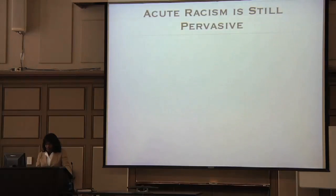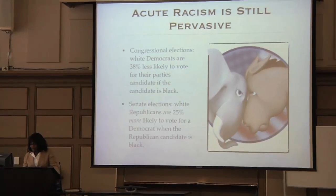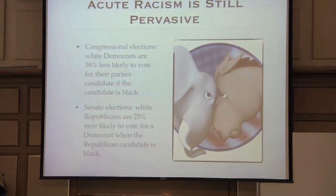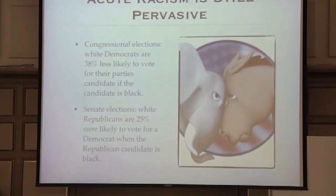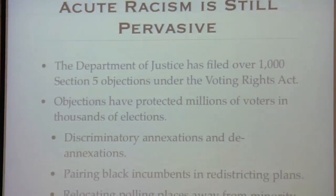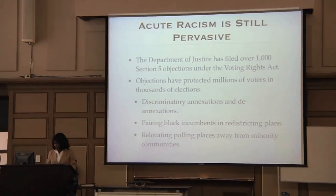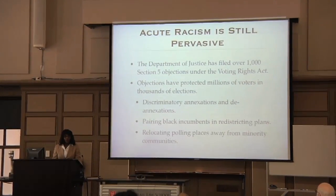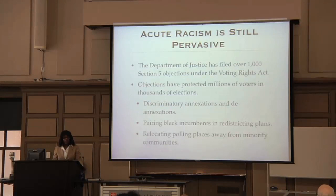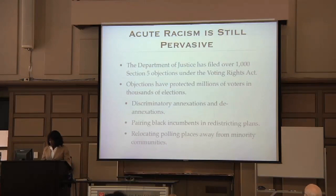Acute racism is still pervasive in the political process. A recent congressional election showed that white Democrats are 38% less likely to vote for their party's candidate if that candidate is black. In Senate elections, white Republicans are 25% more likely to vote for a Democrat when the Republican candidate is black. So we still have evidence of racially polarized voting. The Justice Department certainly sees that evidence — it has filed over 1,000 Section 5 objections under the Voting Rights Act in recent years, and these objections have protected millions of voters in thousands of elections.